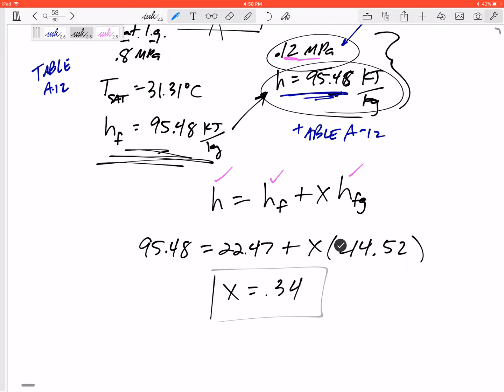So that was what it asked for—the quality. It also asked for the temperature drop. Now I knew that this temperature was 31.31 because it's a saturated temperature. Whether it's a mixture or changing from saturated liquid to saturated vapor, it's at that T_sat.